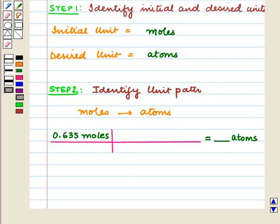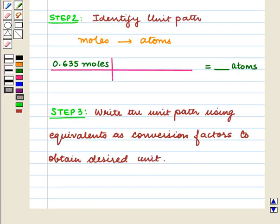So our unit path will look like where the initial quantity is 0.635 moles and the desired quantity will be in atoms. The next step is to write the unit path using equivalents as conversion factors to obtain desired unit.